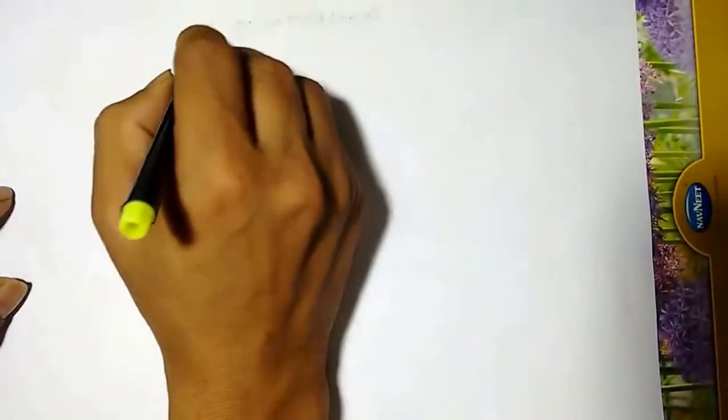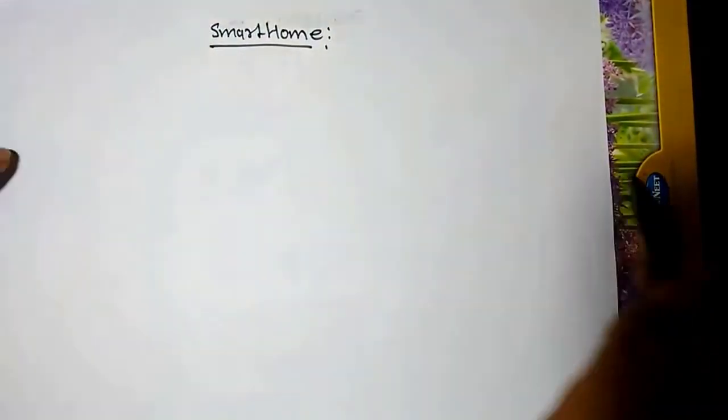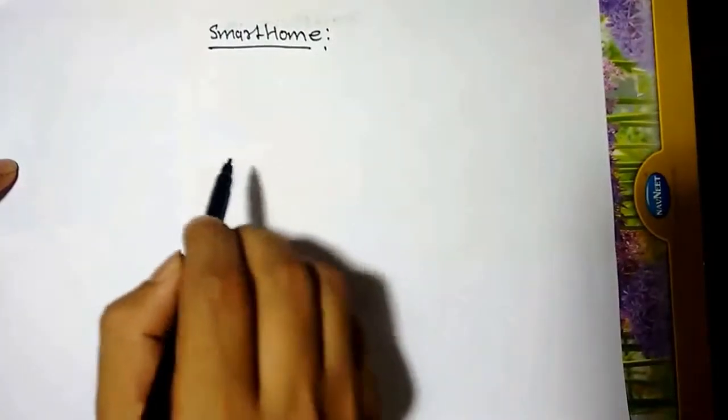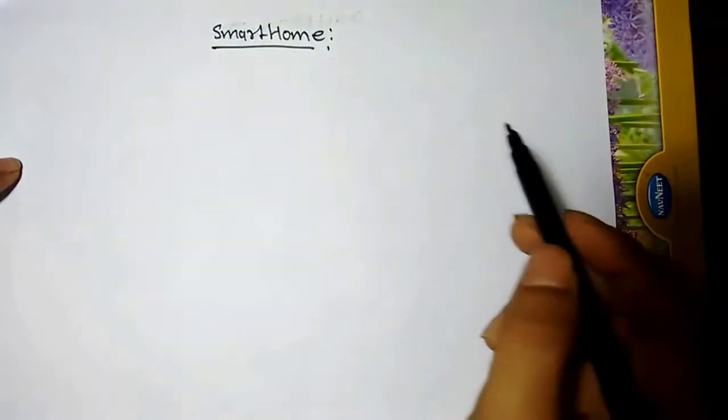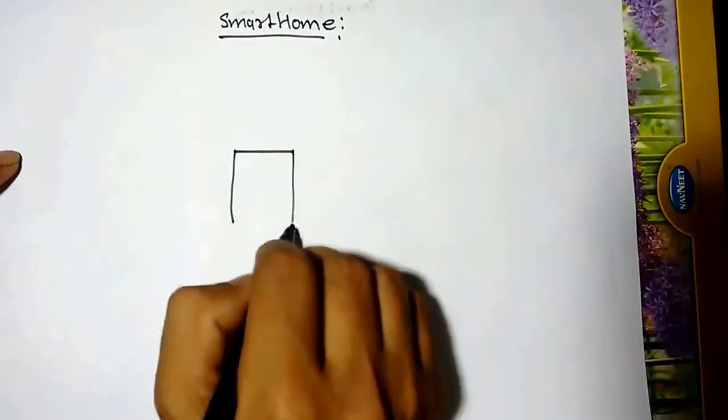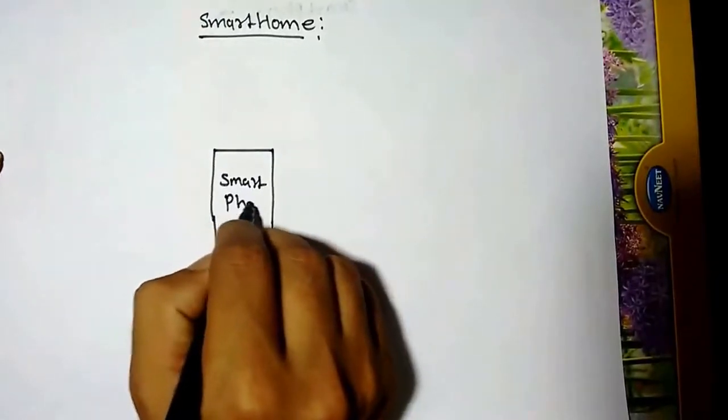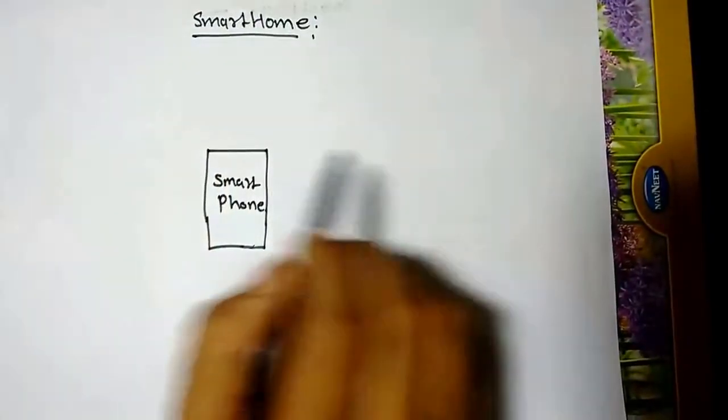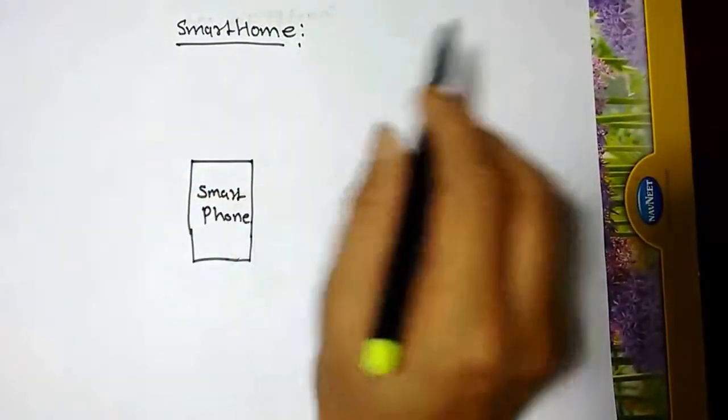I am going to explain a smart home application in the internet of things. The smart home is where devices like door, AC, fan, light, and security systems are connected through your smartphone system. The smartphone will control each and every device in your home through the wireless system.